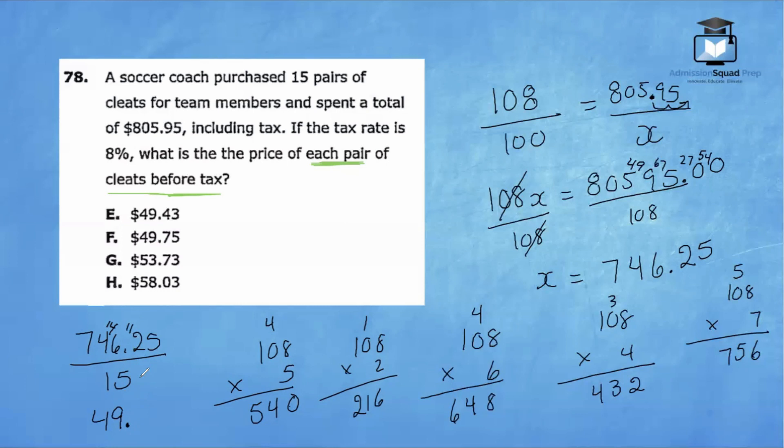15 into 112 goes seven times because 15 times seven is 105, and then we'll have a remainder of seven. Finally, 75 divided by 15 is five. So the final answer here is $49.75.